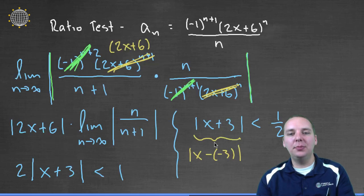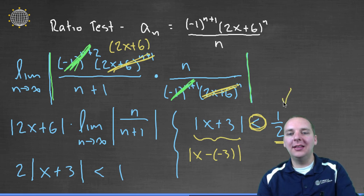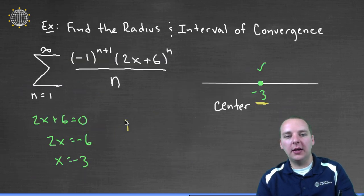So what this says in plain English is that the distance between x and negative 3 has to be less than half a unit. So I hope that makes it clear to you that this number right here that you get on the opposite side of the inequality, this is your radius of convergence. If x is more than half a unit away from 3, then this distance will be greater than a half. So the radius of convergence is a half, so we can write that down.